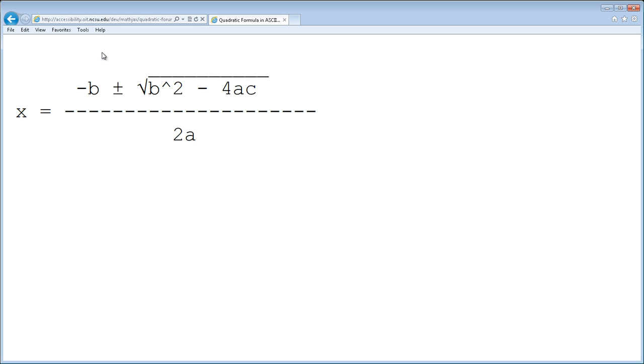Quadratic formula in ASCII characters underline, underline, underline, dash B plus or minus VB care 2 dash 4x equals dash dash dash 2a. So you can see it's virtually impossible to understand what this equation actually is using plain text.